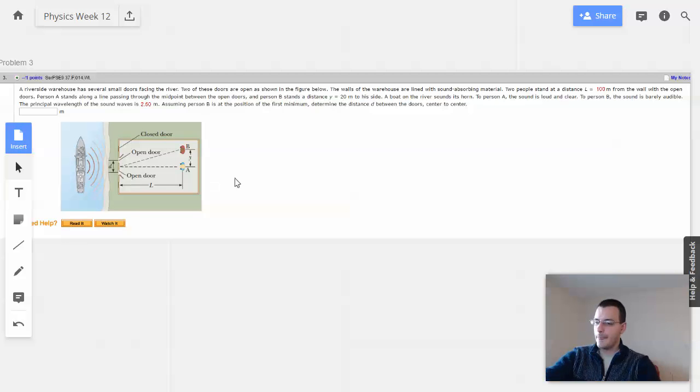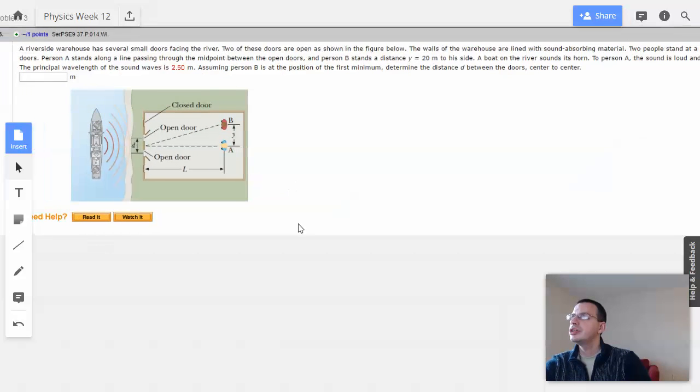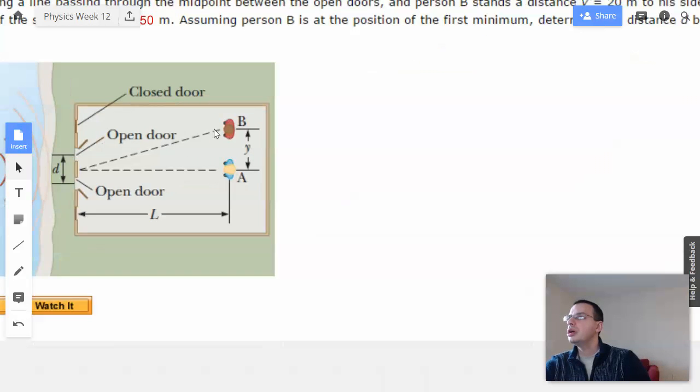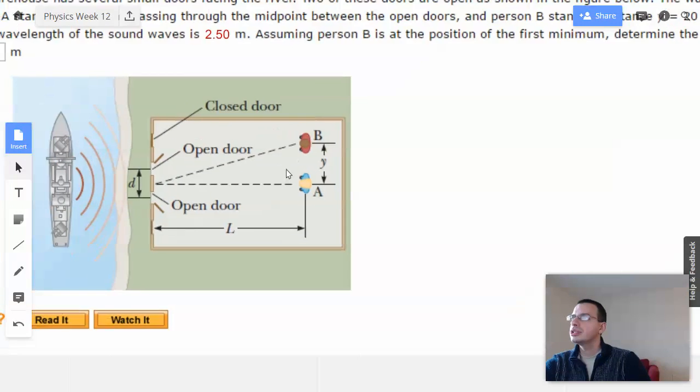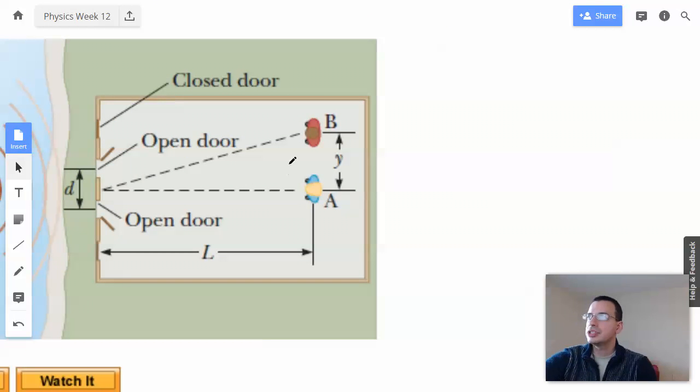So this is two-slit interference. It says that to the first person, the sound is loud and clear. For the second person, it is barely audible. Which means we're at a maximum at the first person, and a minimum at the second person.